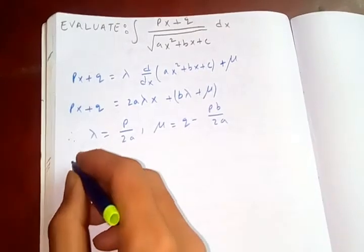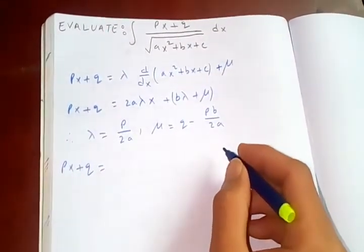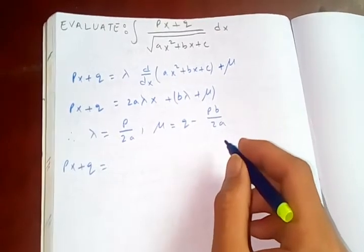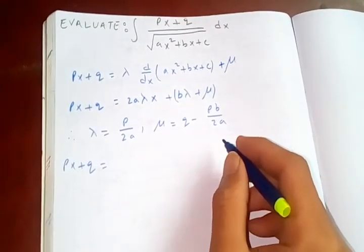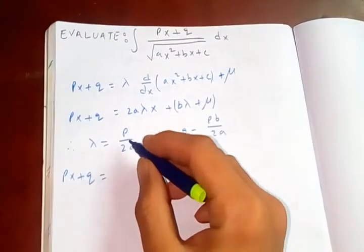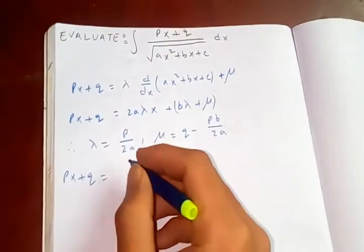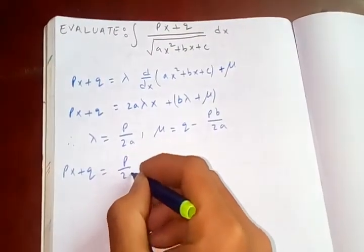Now, we are going to put back lambda and mu. Since we have to find out the value of lambda and mu, we are going to substitute it back.